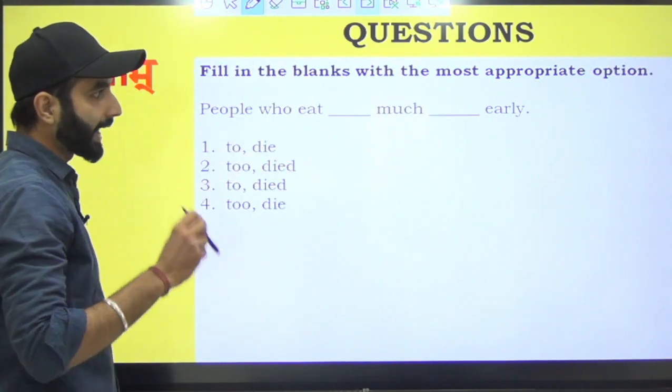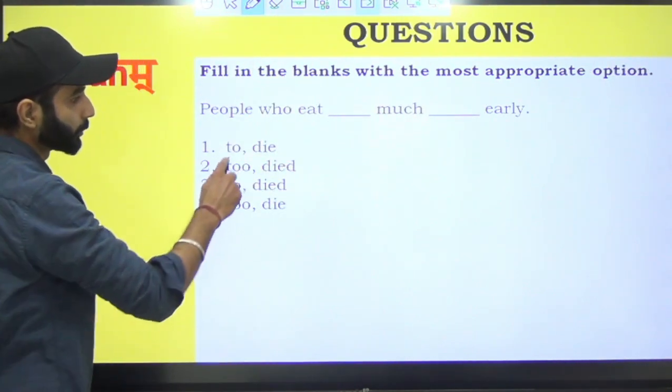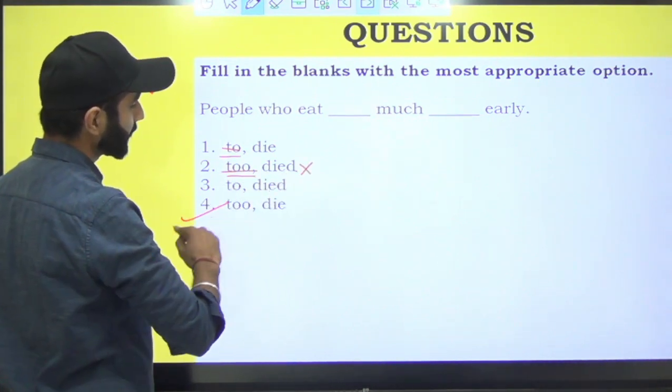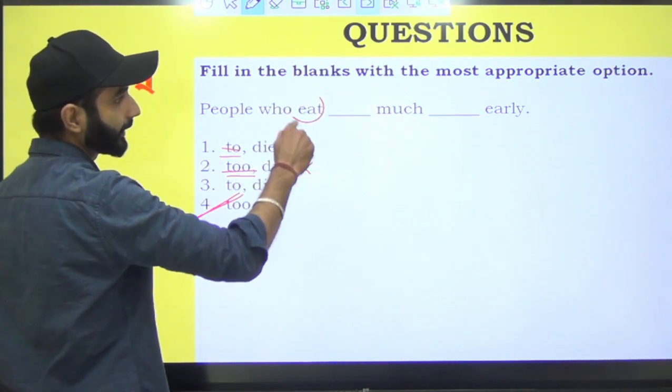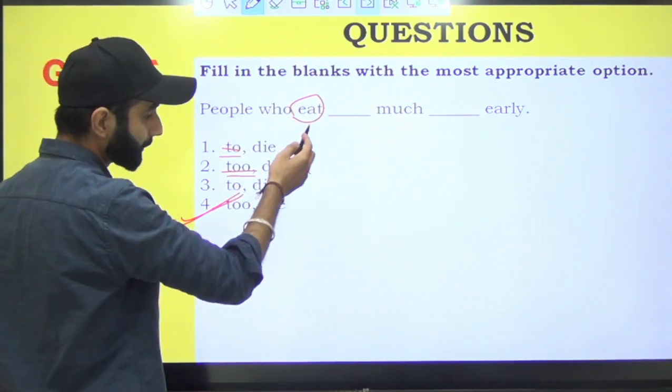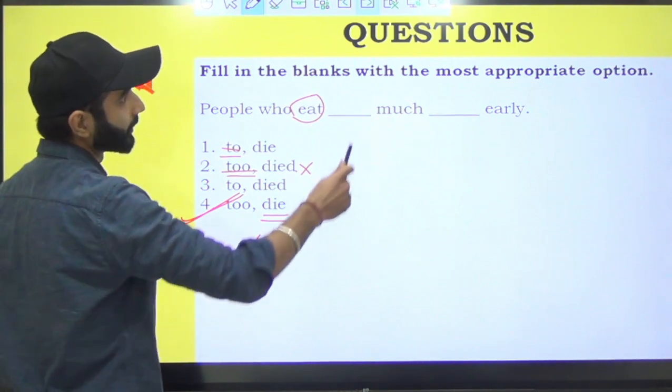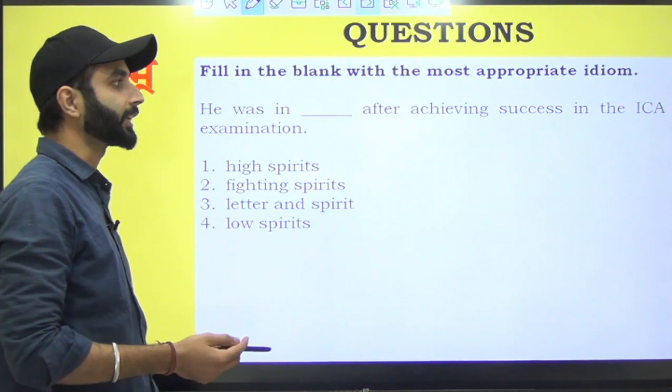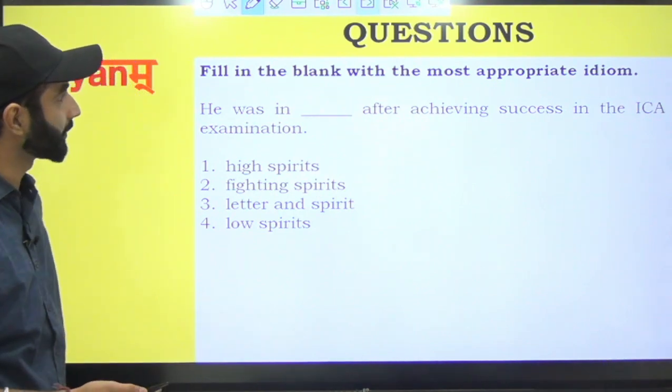People who eat dash much dash early. Too much aana chahiye. But 'died' nahi. Too much, die early. Kyunki 'eat' lag raha hai. Woh eat nahi lag raha hai. Jinhone khaya tha, woh marte the na. Yahan par bhi present hai, toh aage bhi present chalega. The answer is four.